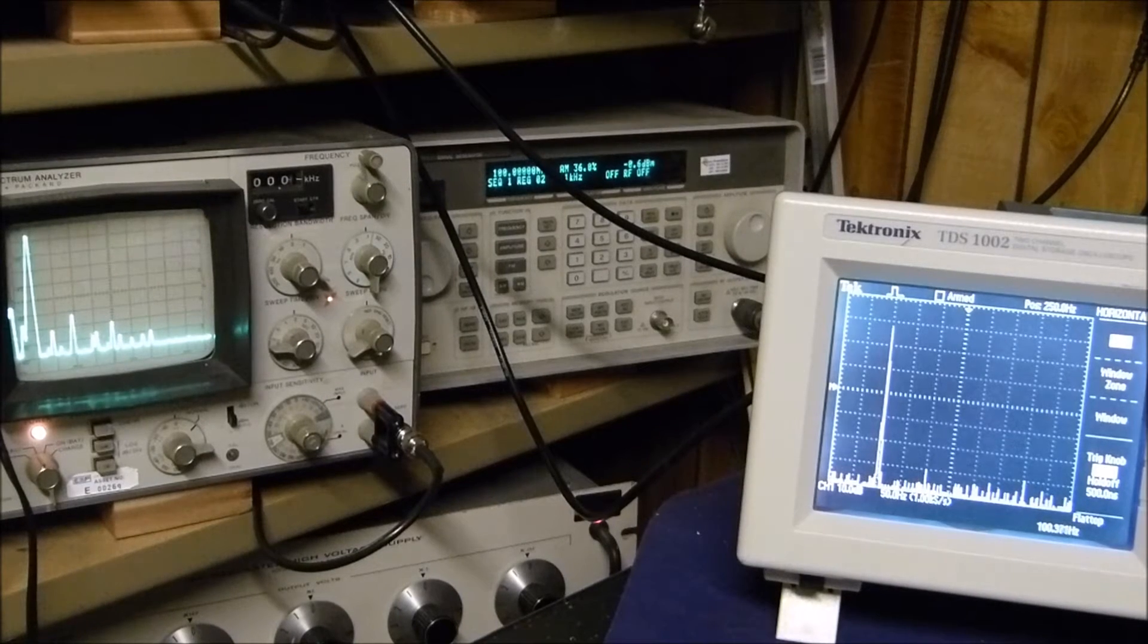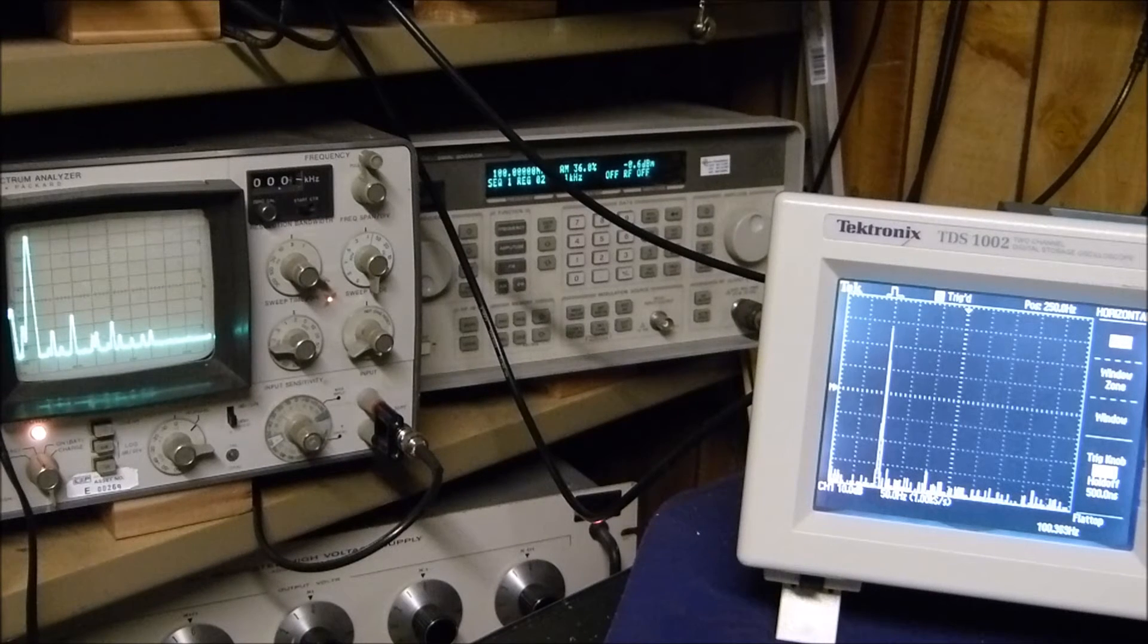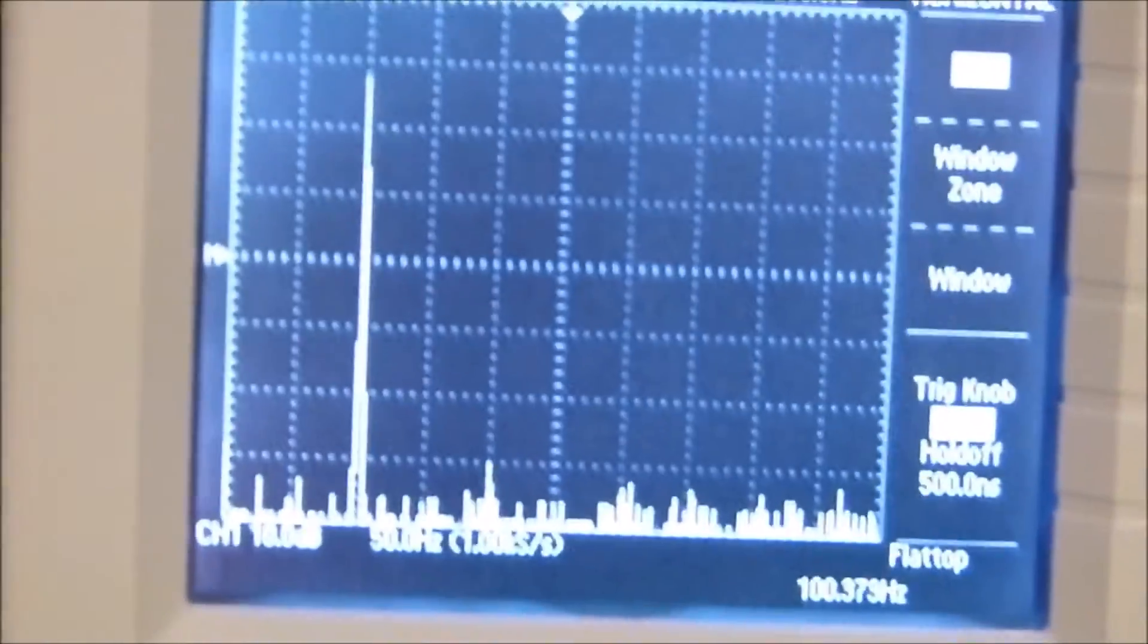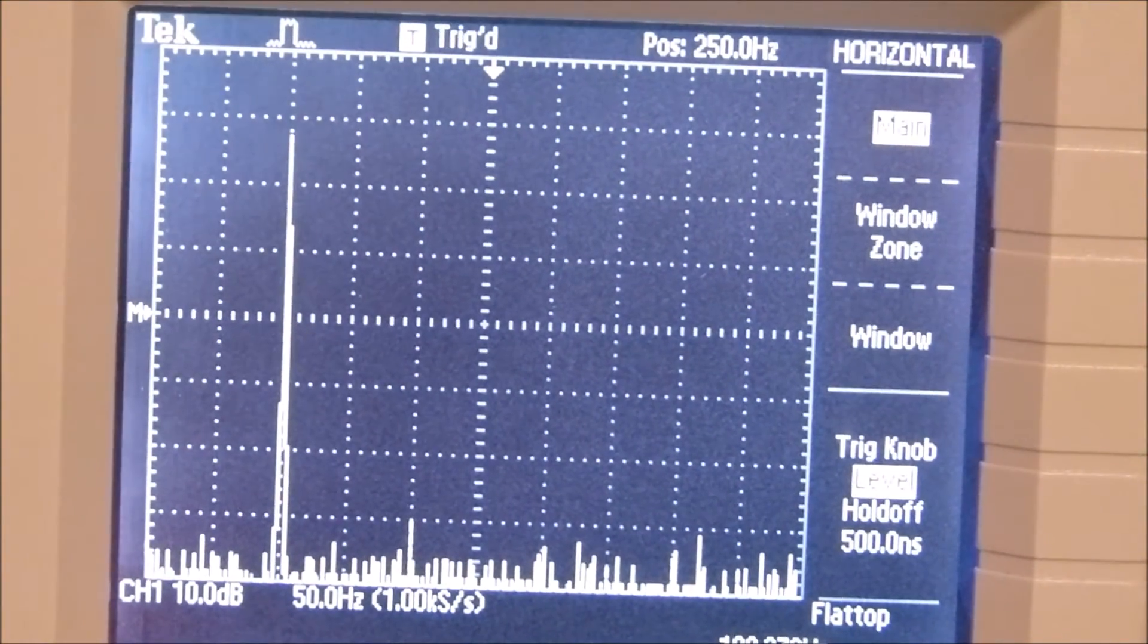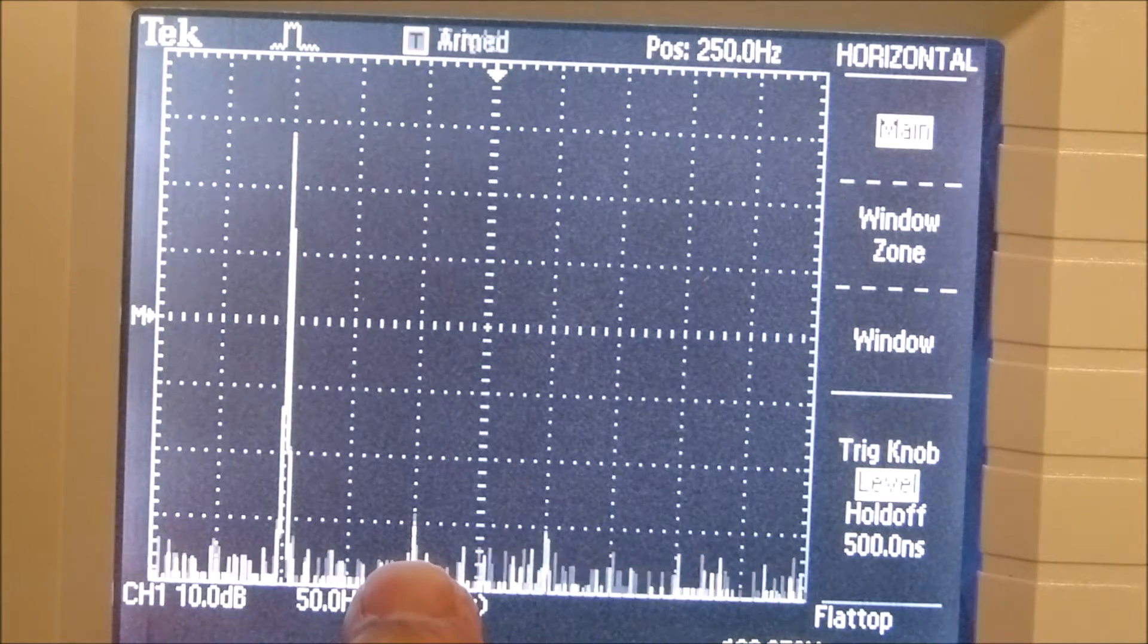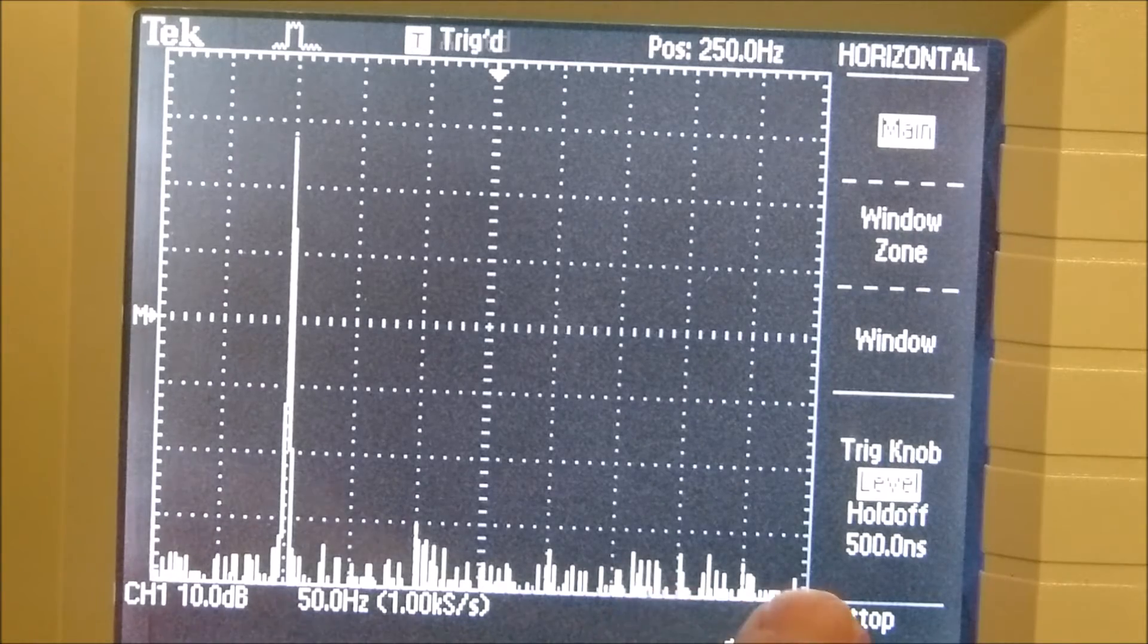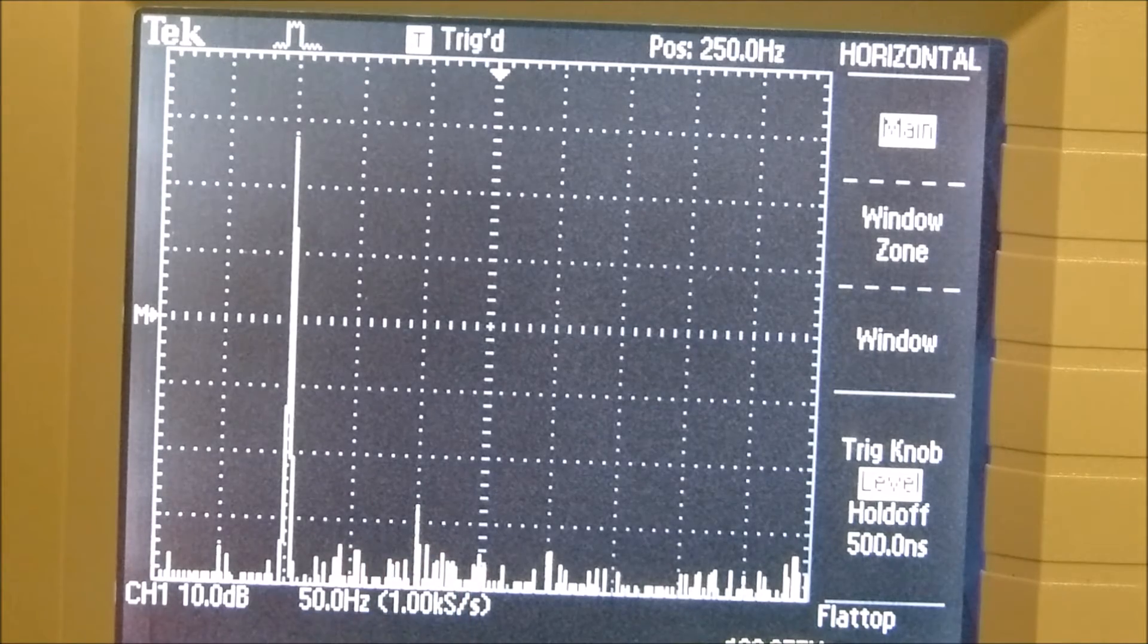Now we're looking at a 100 hertz sine wave and it's pretty hard to compare the two. I do have it sweeping at a slightly different time base. This one is at 50 hertz per division. There's 100 hertz, there's 200, there's the second harmonic. The only thing I see is the second one popping in there once in a while.